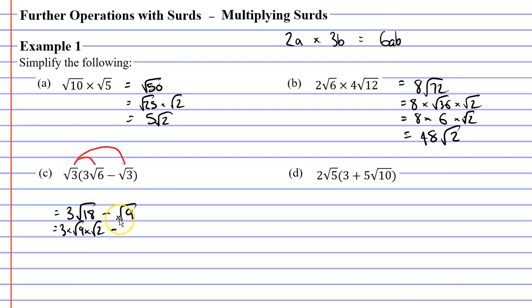For the second term, we have the square root of 9. Since 9 is already a perfect square, the square root of 9 is 3. So we have 3 times 3 times the square root of 2, minus 3. Then 3 times 3 is 9, giving us 9 root 2 minus 3.